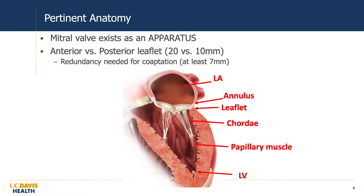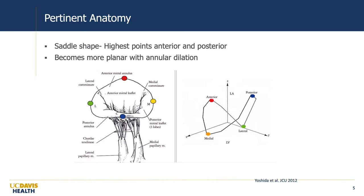In developing transcatheter annuloplasty technologies, we must be aware that the mitral valve exists as an apparatus with numerous contributing elements to its function. Transcatheter annuloplasty targets annular dilatation, which is only one aspect of functional MR, but can be highly effective in properly selected patients as seen from the surgical experience. The mitral annulus is normally saddle-shaped with the highest points being anterior and posterior, but becomes more planar with heart failure and annular dilatation, making transcatheter techniques perhaps a little easier to anchor on a flat annulus.